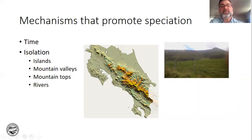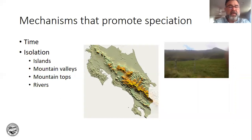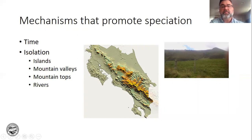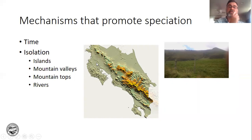If you imagine a single population divided by a mountain range, now you have a population here that no longer breeds with this population. That's how you get new species. Going back to our species concepts — as soon as you separate them, if you were dealing with the evolutionary species concept, you would say this population over here and this population were no longer breeding, so they would be new species. Mountain ranges will create speciation in the valleys, and the valleys will create speciation for things that live on mountain tops.